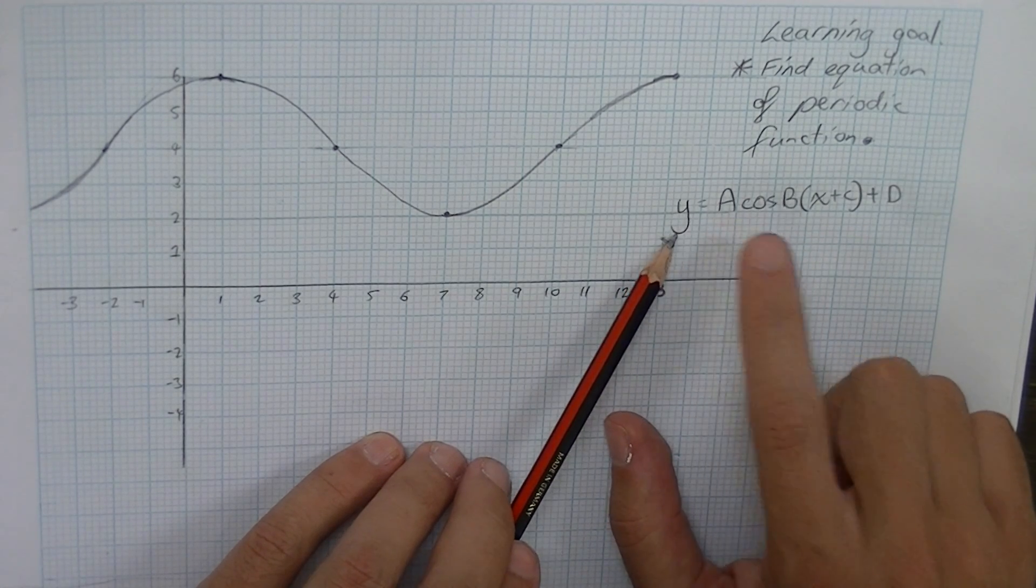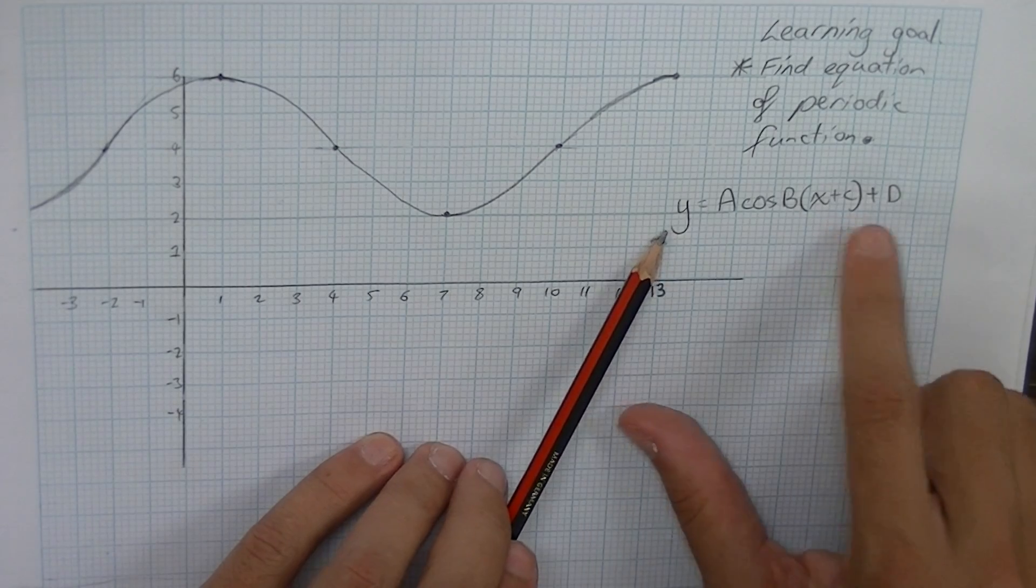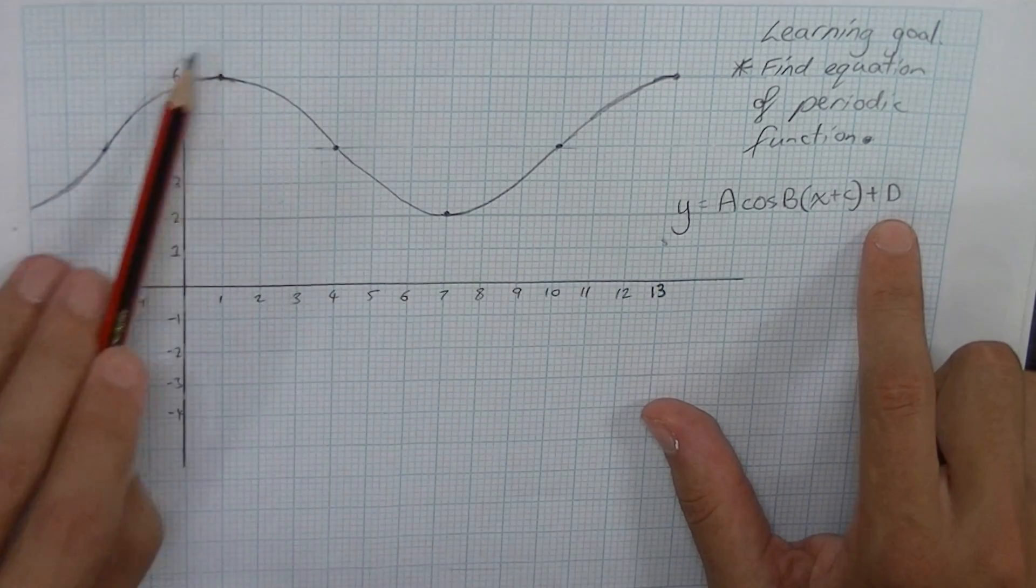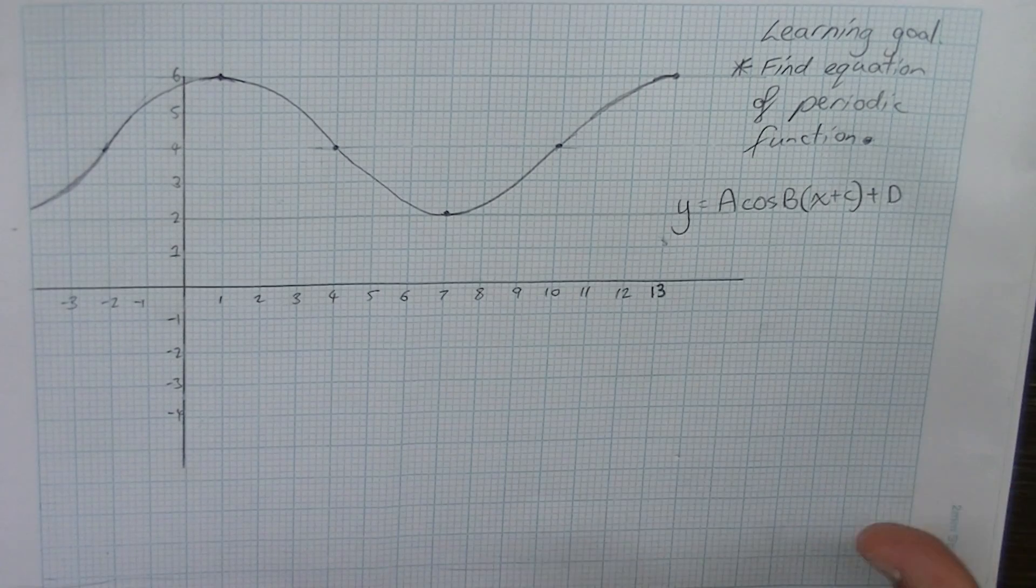So that's our general form of a periodic equation. We really just need to know what the a value, the b value, the c value and the d value is for this equation. So let's get started here.